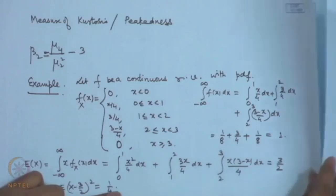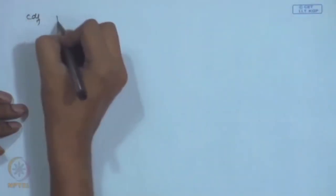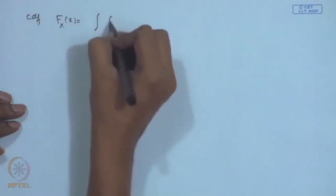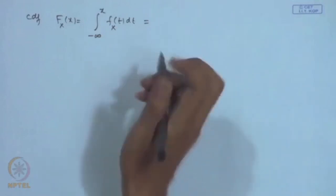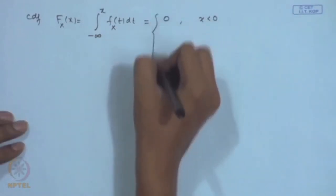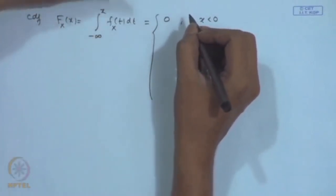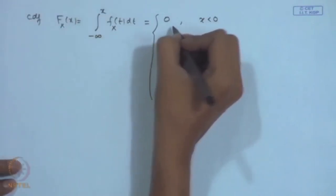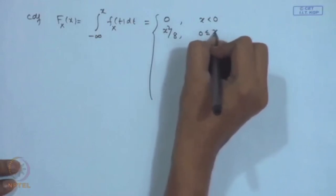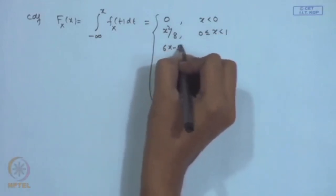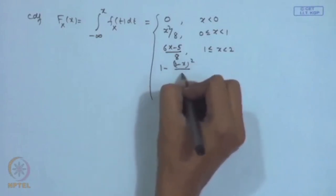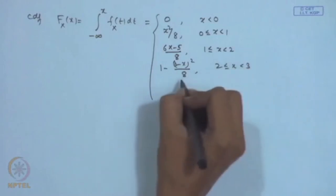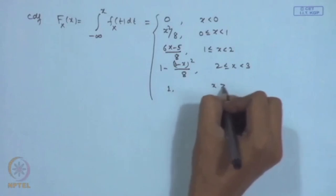The CDF for this example: F(x) = 0 for x < 0; F(x) = x²/8 for 0 ≤ x < 1; F(x) = (6x - 5)/8 for 1 ≤ x < 2; and F(x) = 1 for x ≥ 3.